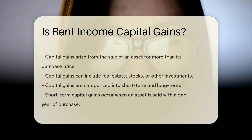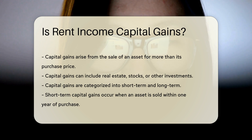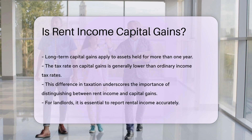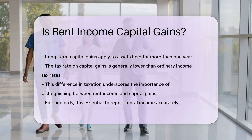Capital gains arise from the sale of an asset for more than its purchase price. This can include real estate, stocks, or other investments. Capital gains are categorized into short-term and long-term. Short-term capital gains occur when an asset is sold within one year of purchase. Long-term capital gains apply to assets held for more than one year. The tax rate on capital gains is generally lower than ordinary income tax rates.